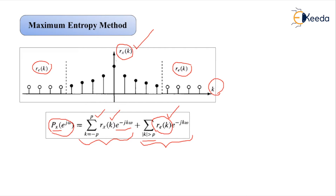The extrapolated values R_E(k) must satisfy a constraint so that the net power spectral density P_x(e^jω) is valid. The criteria for a valid power spectral density is that it should be real-valued and non-negative for all values of angular frequency ω.